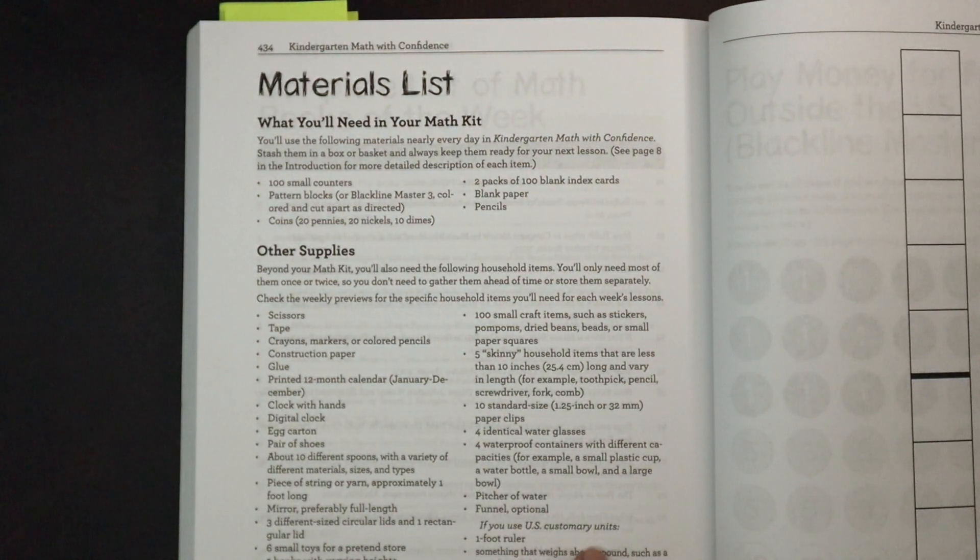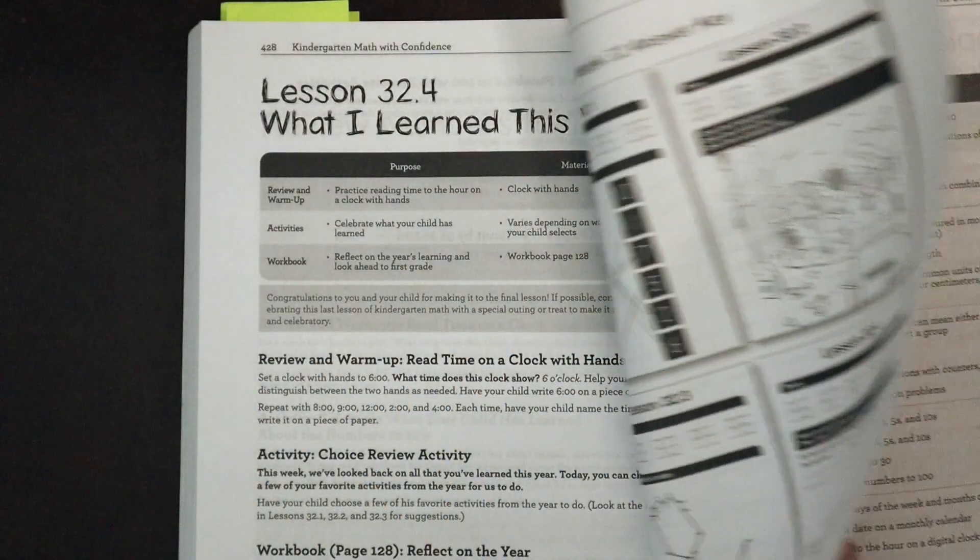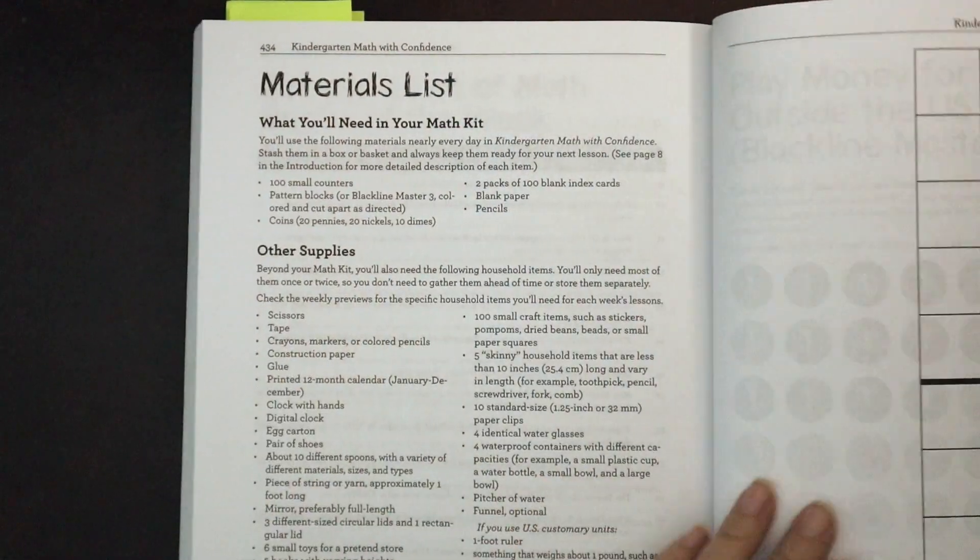At the end of the book, we have a book list, the scope and sequence. We have materials list, and then we have some black line masters.